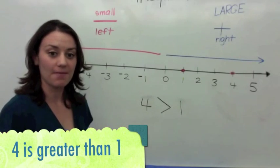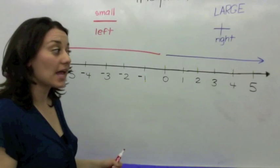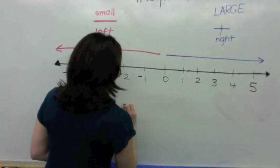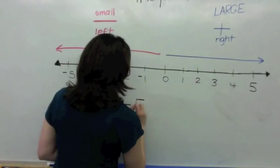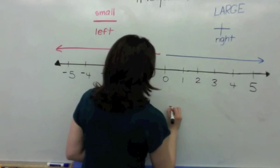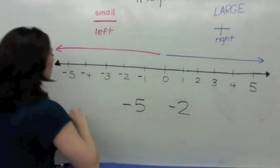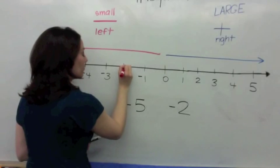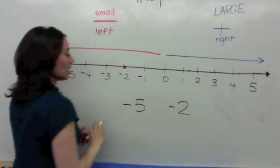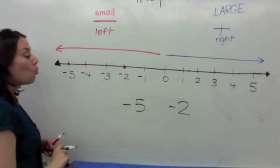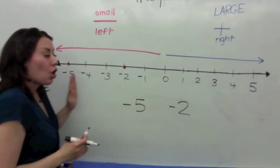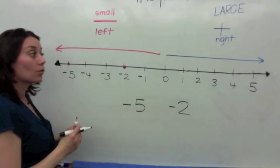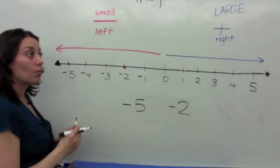Let's look at an example with negative numbers. Let's compare negative 5 with negative 2. You plot negative 5 on the number line and you plot negative 2. Which one is closest to 0? That would be what?